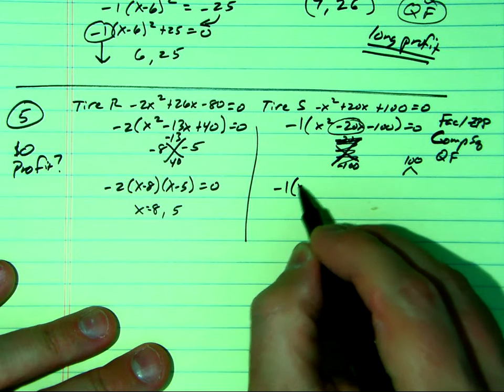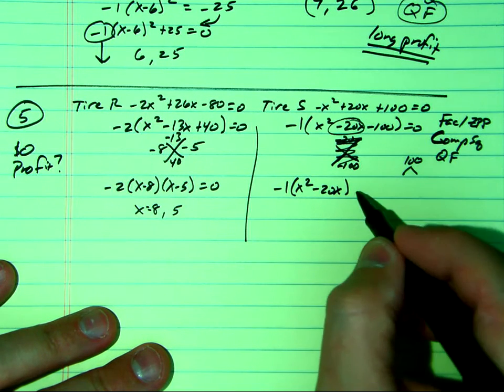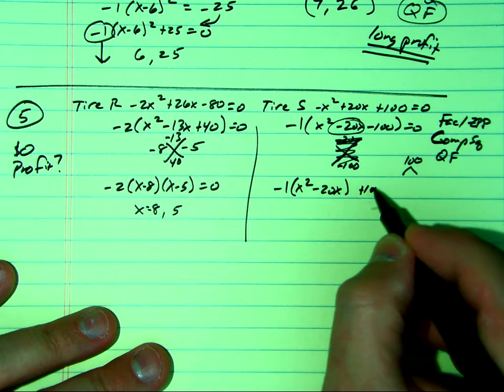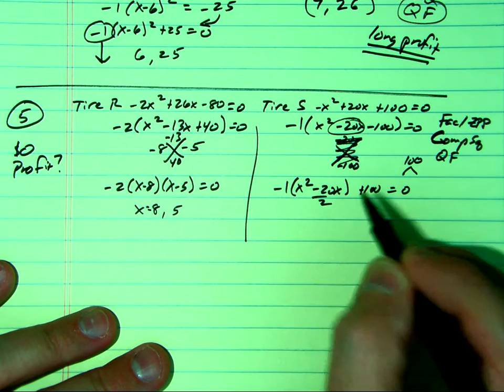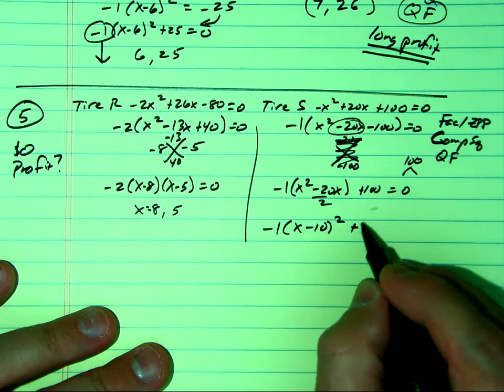Now, complete the square. Minus 20x, let's see, let's make this back to plus 100 equals 0. Let's complete the square. x minus 10 quantity squared plus 100.